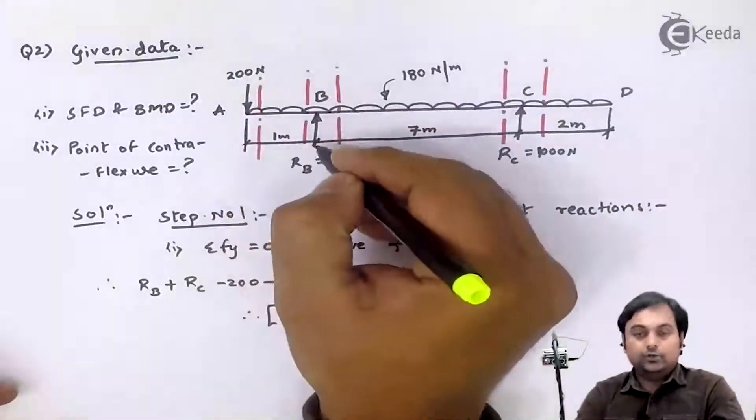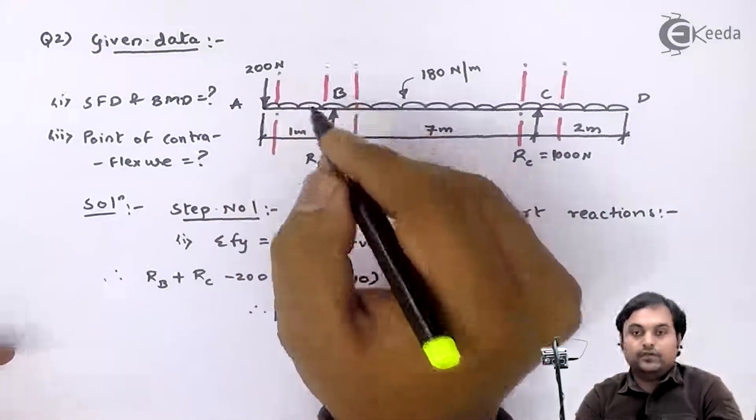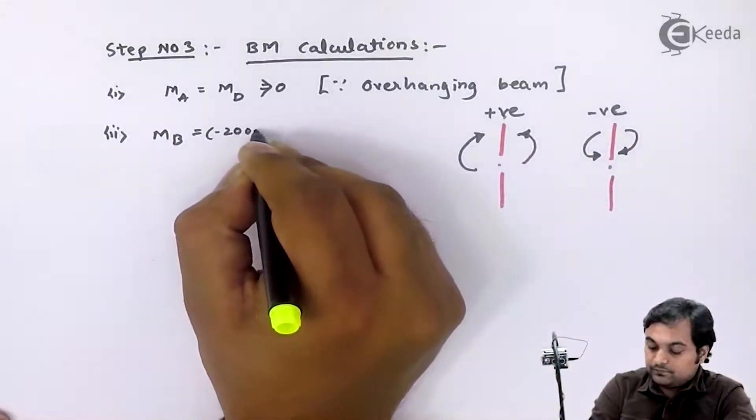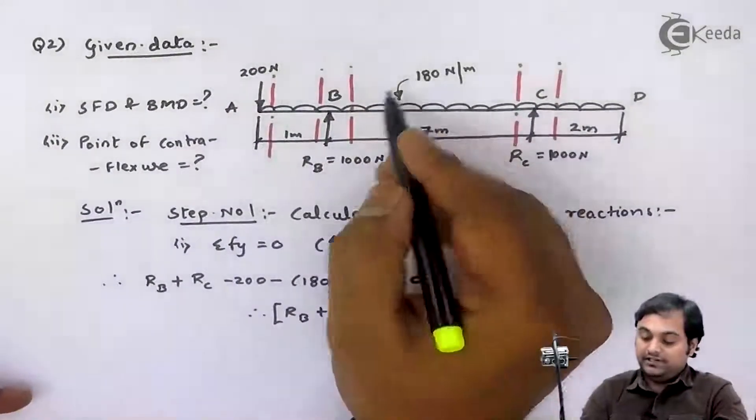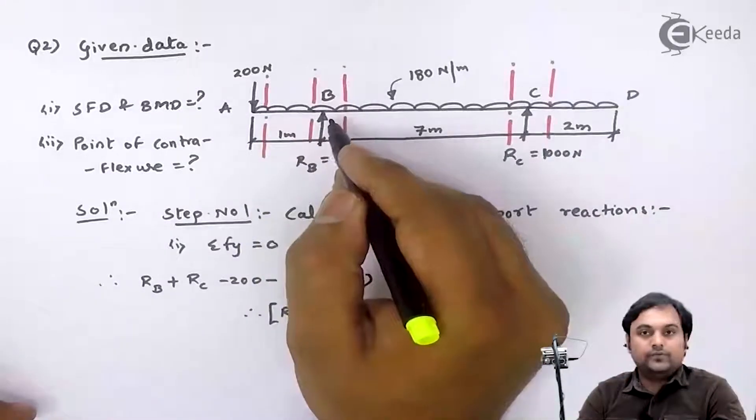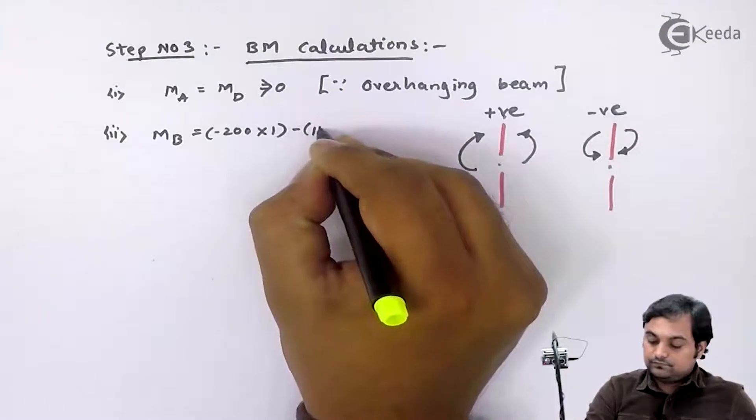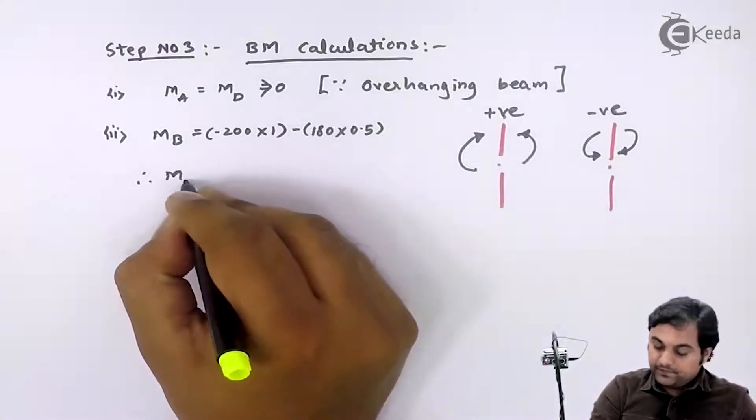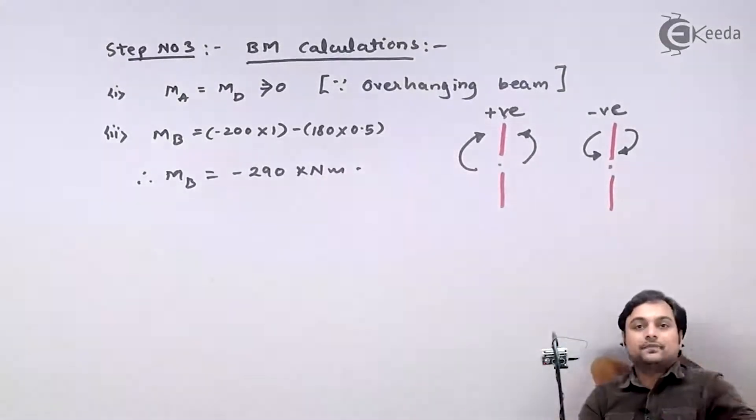Here I have 200 into 1. So my section is at B, and to the left of B I have anti-clockwise moment, so it has to be negative, so minus 200. Then 100 into 1, then I have 180 into 1 acting at half and producing again anti-clockwise moment, so it is minus 180 into 0.5. So moment at B, it comes out to be minus 290 kNm.